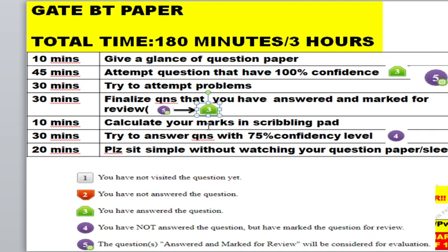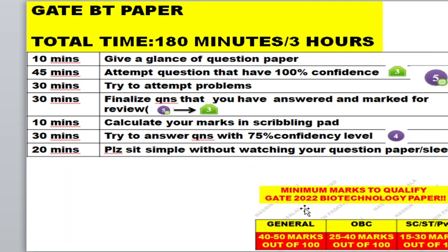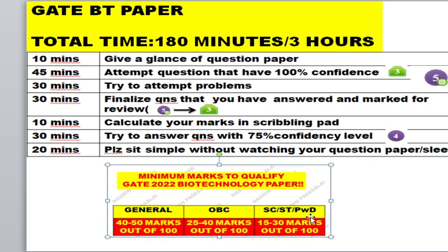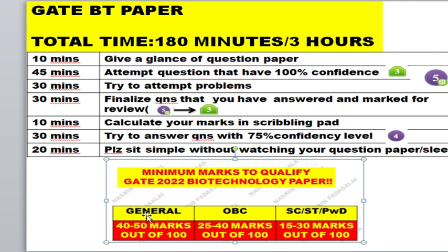In the last 10 minutes, calculate your marks using the scribbling pad. For General category you need 40 to 50 marks, for OBC you need 25 to 40 marks, and for SC/ST and persons with disability you need 15 to 30 marks. After 85 minutes, calculate all the marks you've noted — each correct answer should have been recorded as one mark or two marks.